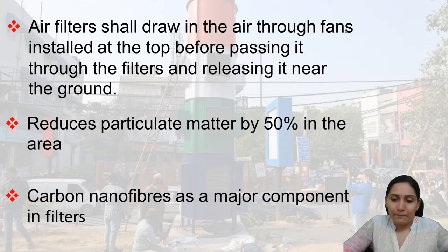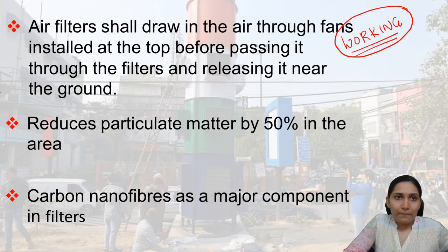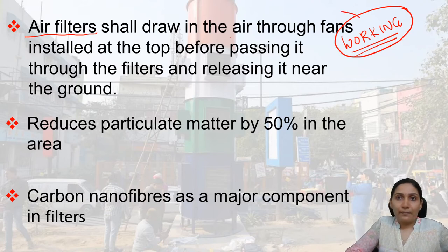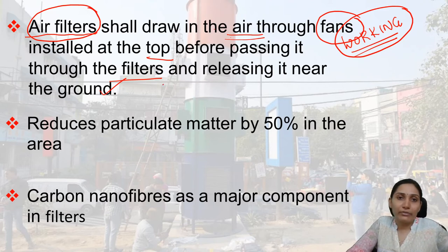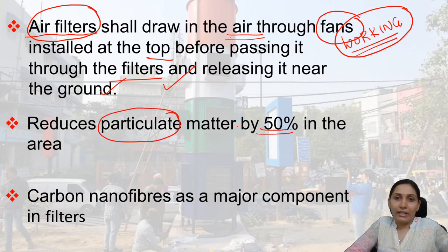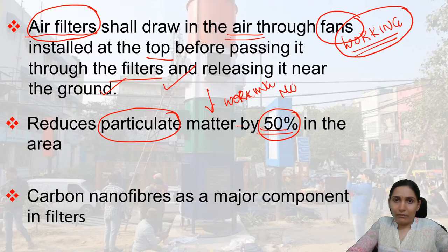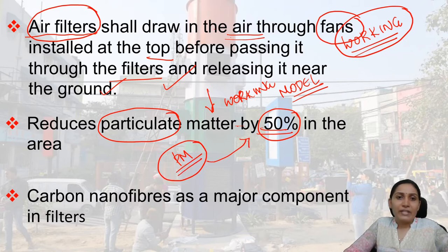Regarding how the air filters work: the air filters draw in air through fans installed at the top, before passing it through the filters and releasing it near the ground. This working model helps reduce particulate matter (PM) by 50 percentage in the surrounding area.